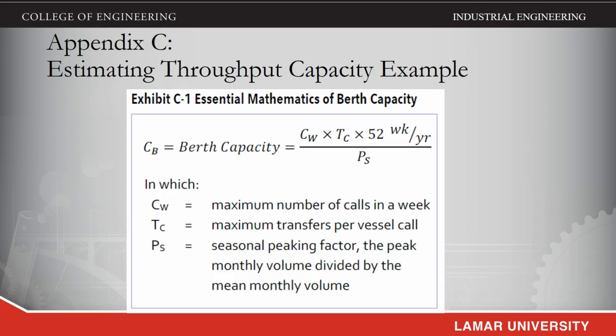The throughput capacity of a facility is a function of the physical assets of the facility and the rate at which those assets are used. Physical assets can be identified from drawings and other resource descriptions. The rate of asset use generally has two components: physical space and time. With regard to physical space, the analysis must recognize that in addition to physical space actually in use, the facility operators must reserve empty space that maintains fluidity and allows the facility to operate at adequate productivity.